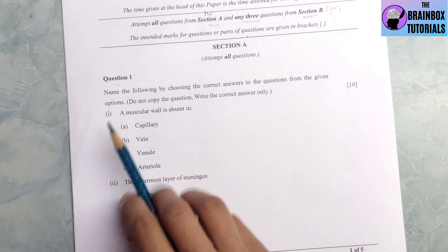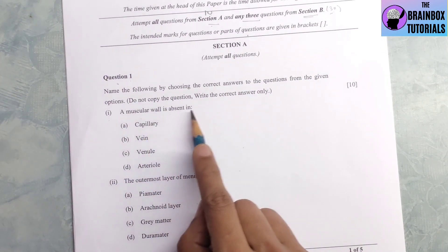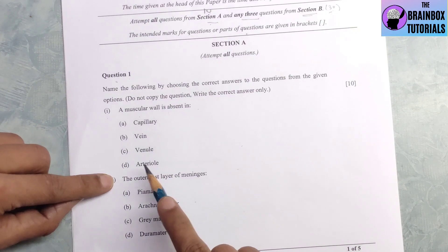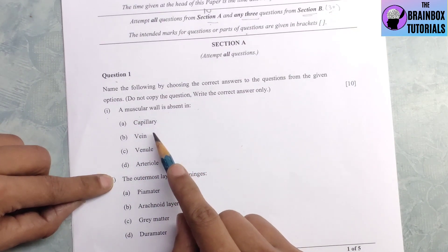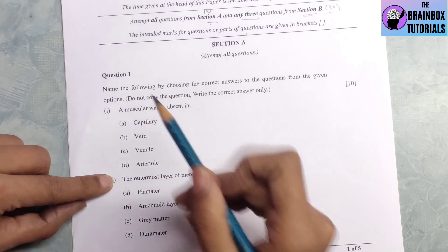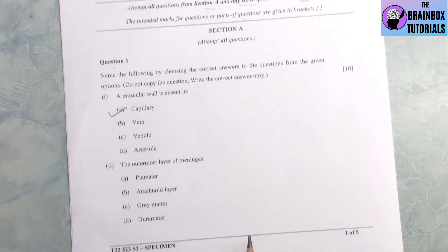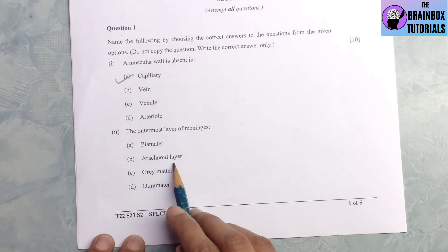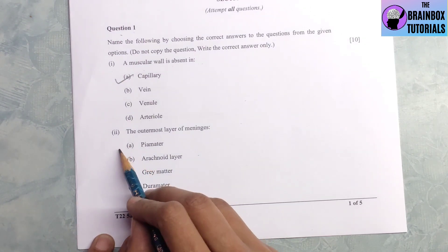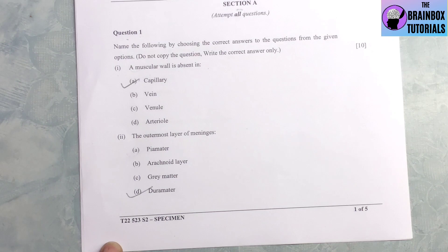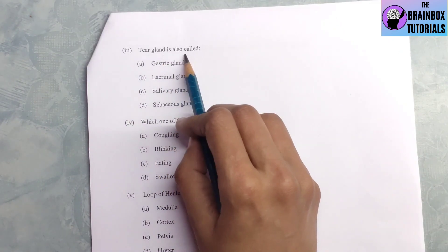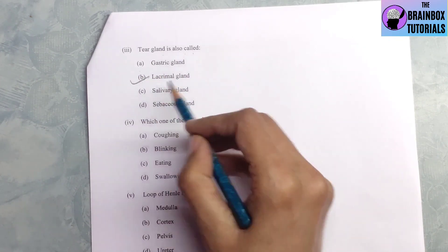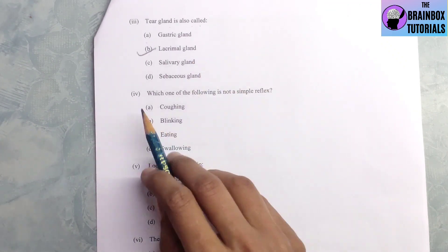Let us start with section A, question number 1. Subpart 1, a muscular wall is absent in capillary, vein, venule or artery. The correct option is capillary. Number 2, the outermost layer of meninges is pia mater, arachnoid layer, grey matter, or dura mater. The dura mater, number D. Part 3, tear gland is also called lacrimal gland. Yes, lacrimal gland.